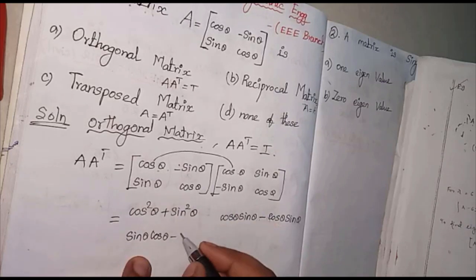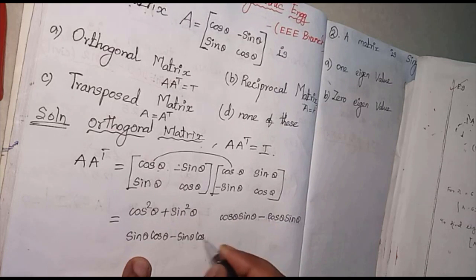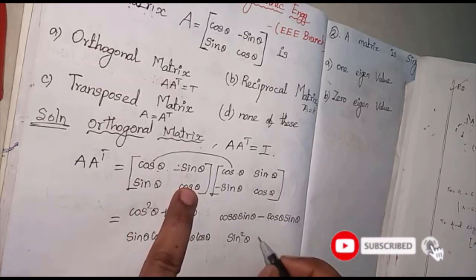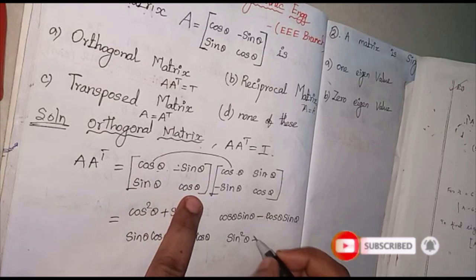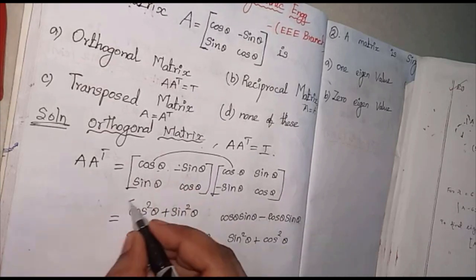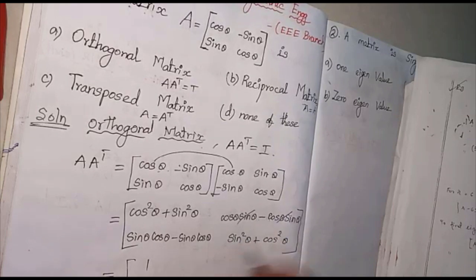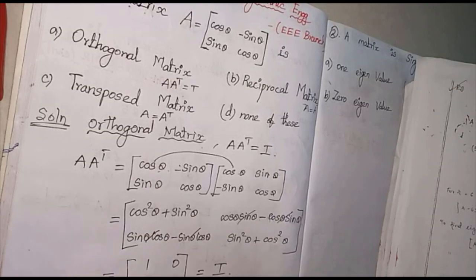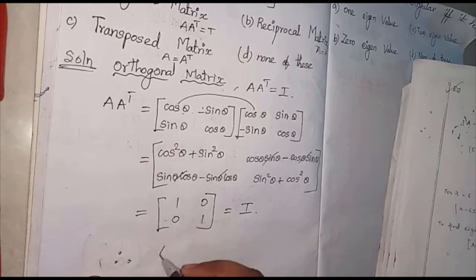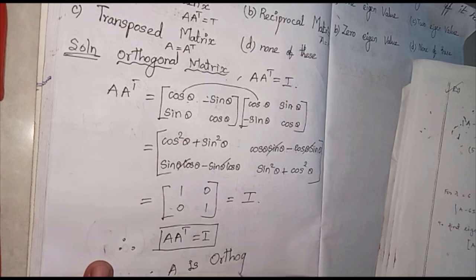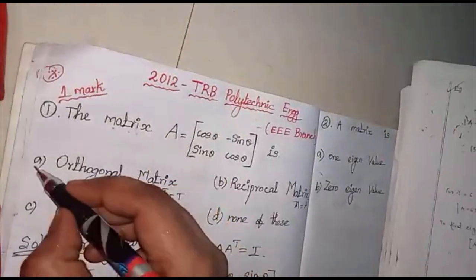Adding the terms: minus sin theta cos theta, then sin into sin gives sin squared theta, and cos into cos gives cos squared theta. We know cos squared theta plus sin squared theta equals 1, and the off-diagonal terms subtract to 0. So we get the identity matrix. Therefore A times A transpose equals I, so the matrix is an orthogonal matrix. Option A is the correct answer.